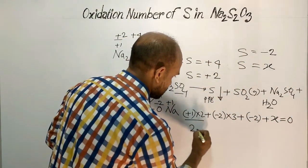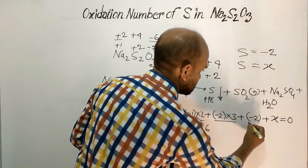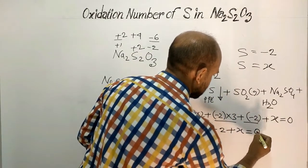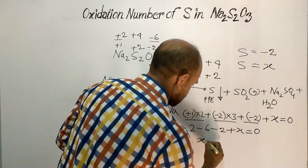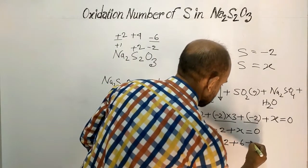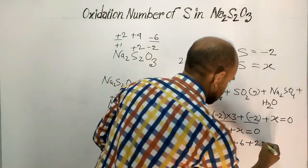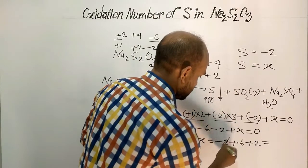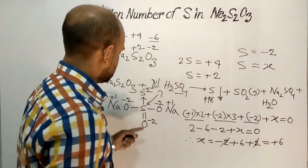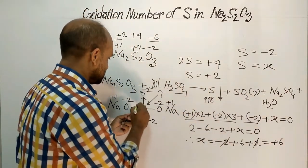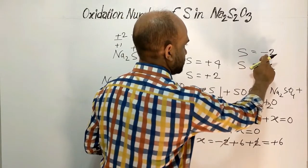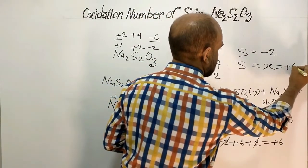Now: 2 (from sodium) minus 6 (from oxygen) minus 2 (from one sulfur) plus x equals 0. Solving: x equals minus 2 plus 6 plus 2, so the 2s cancel and x equals plus 6. So the oxidation number of this sulfur is plus 6, and the other sulfur has oxidation number minus 2.